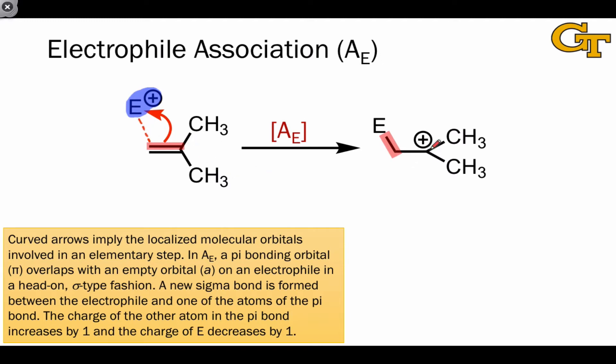The other atom involved in the pi bond ends up with a positive charge, and which of the two atoms forms the bond depends on the stability of this positive charge on one or the other of the atoms within the pi bond.